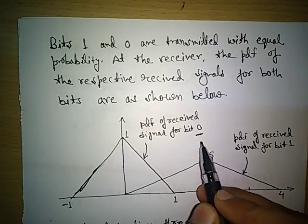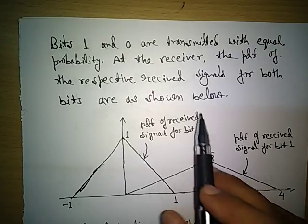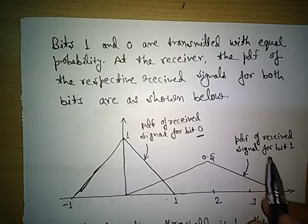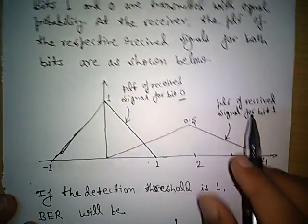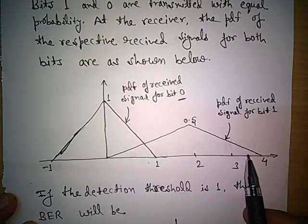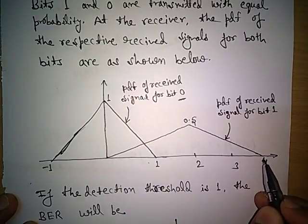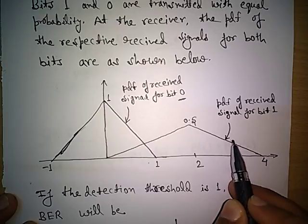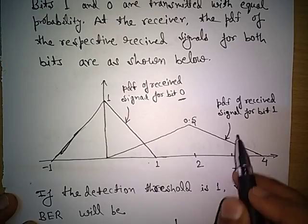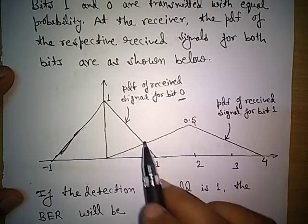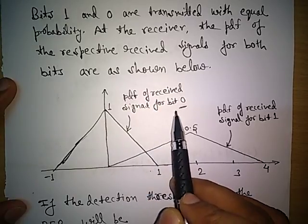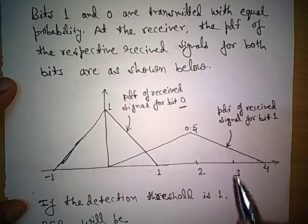If bit 0 is transmitted, then at the receiver the chances of getting the received signal are in a certain range, meaning the probability density function will look like this. If bit 1 is transmitted, then the received signal can be distributed in this form. For a signal having value four this will be the PDF, and for a signal having value three this will be the PDF. So this is the PDF if bit 1 was transmitted, and this is the PDF of the received signal if bit 0 was transmitted.